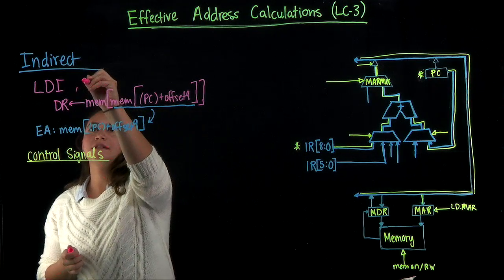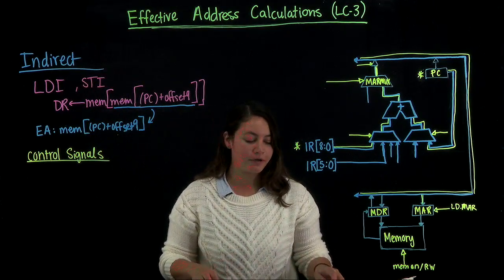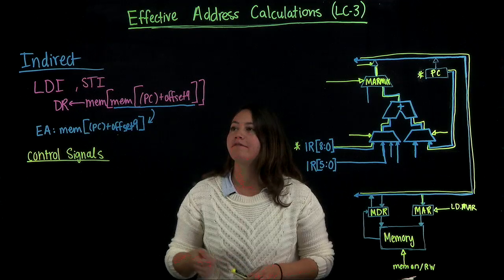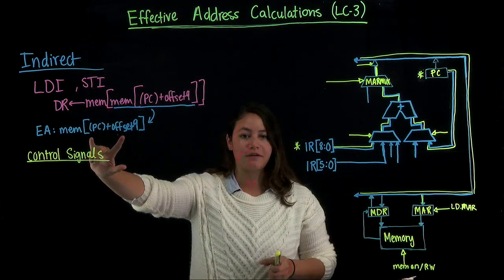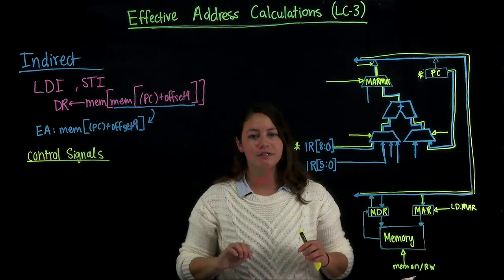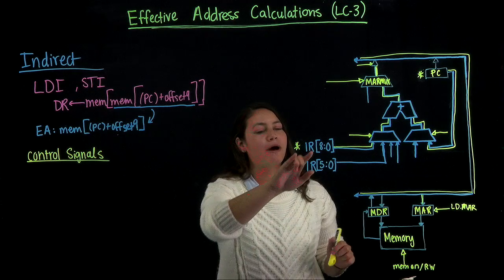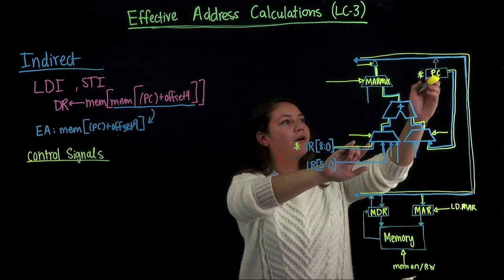Another example is STI. Now we're going to walk through the control signals that the finite state machine would send to perform this address calculation. We're going to start over here the same way that we started with the direct addressing mode by starting with the IR bits 8 through 0 and the PC.